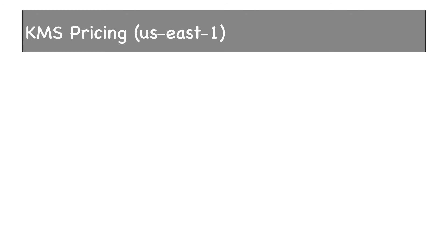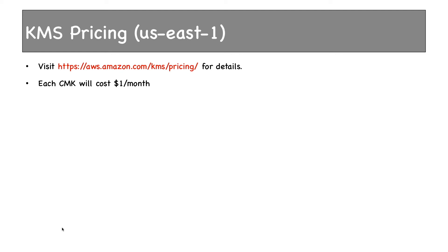KMS pricing as per US East 1 (North Virginia) region is pretty straightforward — you can visit the pricing page for more details. Each CMK costs $1 per month, so two CMKs would cost $2 per month. Each API request also has a cost: every 10,000 API requests cost $0.03. KMS API requests include operations like encrypt and decrypt. So 10,000 operations cost $0.03, another 10,000 cost $0.06, and so on. That's all about KMS pricing and AWS KMS. Thanks for watching.